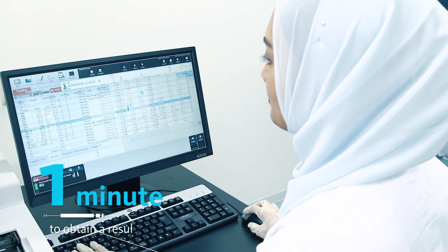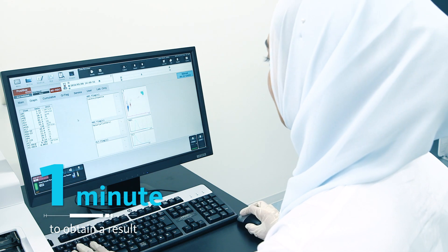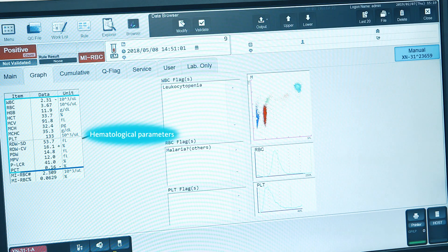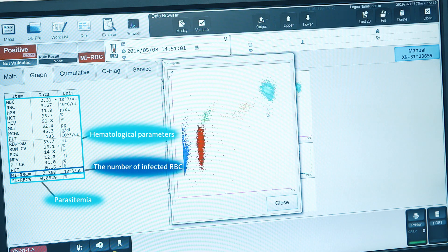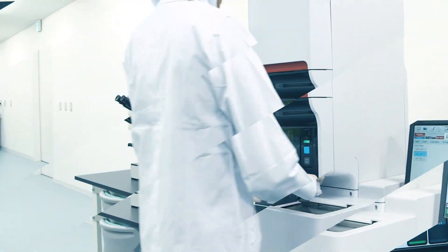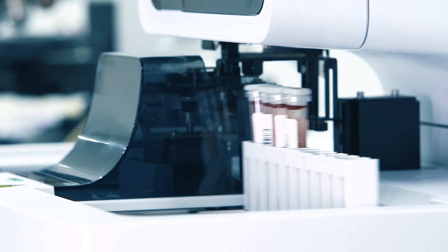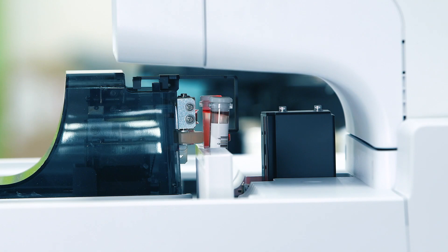It only takes one minute to obtain a result, such as the number of infected RBC, parasitemia, as well as hematological parameters. You can select manual analysis or sampler analysis. This enables more efficient testing.